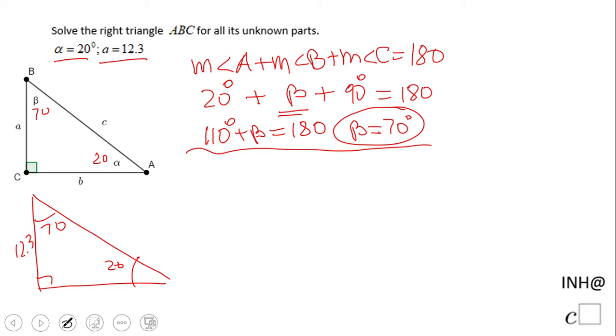You have choices now - you can use any of these angles, the 20 or the 70, and use a trigonometric function. I'm going to use the 20 since this one was given. Let's start with side b. What trigonometric function can I use? I have opposite and adjacent, so that will be tangent.